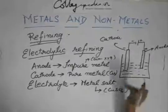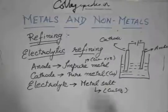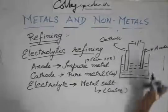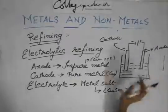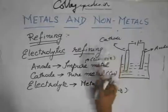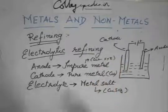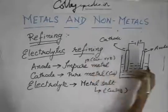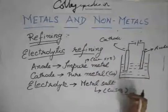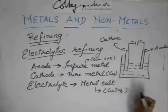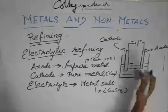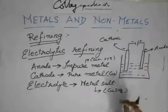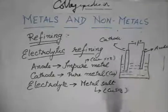What happens is that the anode gets positively charged. The anode is basically copper and these impurities. When it gets positively charged, the copper dissolves into the solution and with it the impurities also go into the solution.